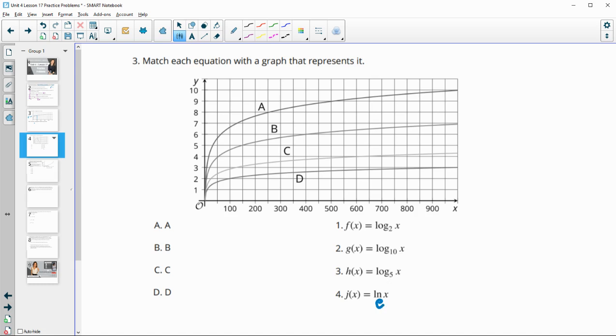So remember, the bigger the logarithmic base, the slower the growth rate, because it's going backwards of the exponential. And so if we look at these growth rates, we've got a 2, we've got a 5, we've got a 10, and we've got an E.